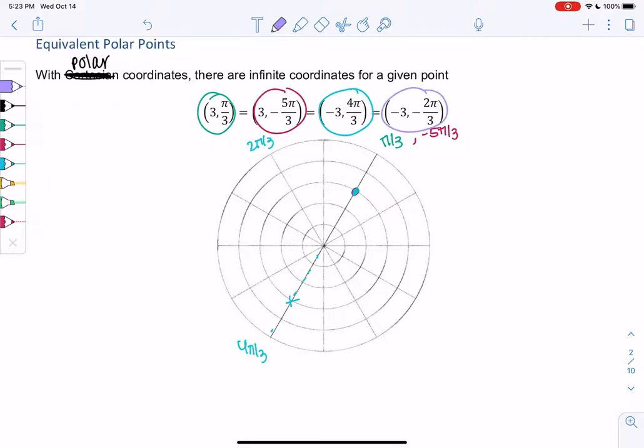And then (-3, -2π/3) would actually be this exact same angle because we're going clockwise. It's negative 3, so we reflect. We found 4 points at the same spot, and there's probably even more. These are just 4 particular points that land in the same spot. That's something to keep in mind: there are infinite coordinates for a single point, more than one way to describe this point.